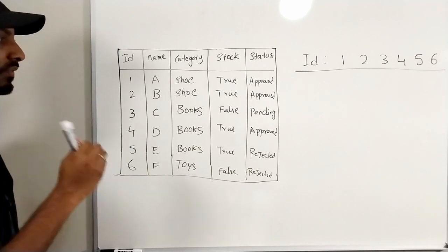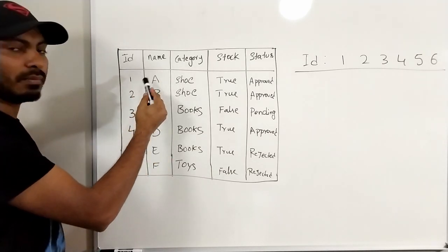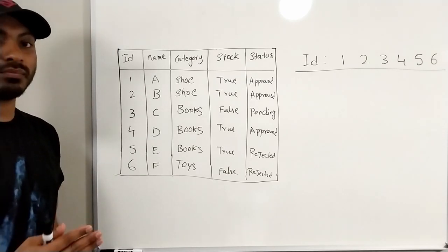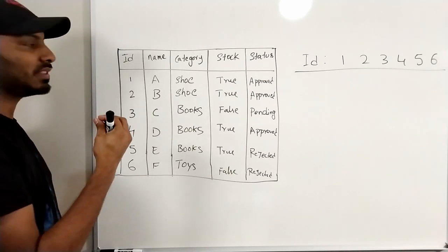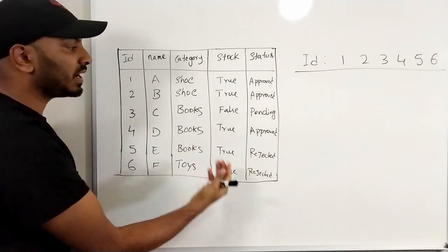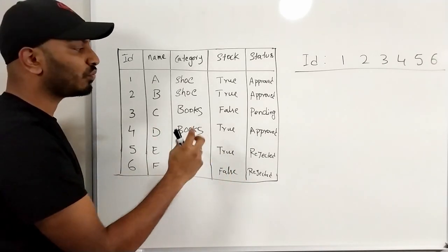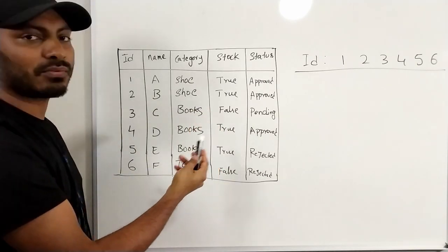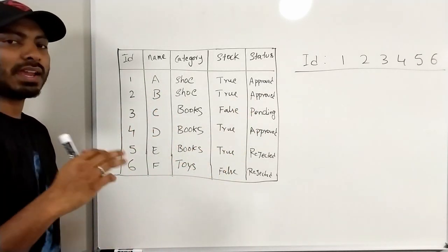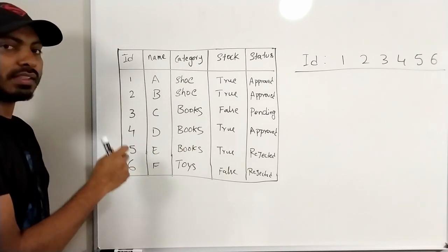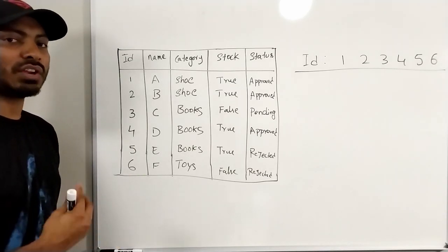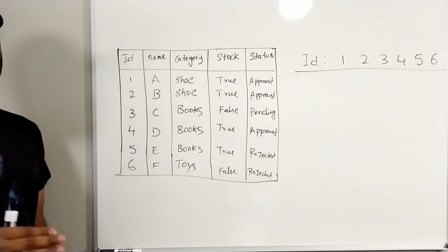If you look closely at this data there is a pattern. In the name column the data is not duplicated at all — names of products, or usernames combining first and last name, are most likely not repeated. In the category column, data is repeated but not too many times. But for stock and status, the data is very limited — stock is just true or false, status is approved, pending, or rejected. For names, the unique count equals the total number of products, which for large e-commerce sites like Amazon or Flipkart can be in the millions.